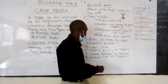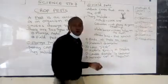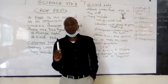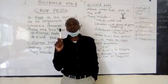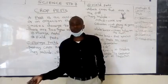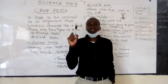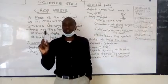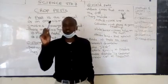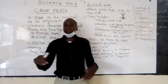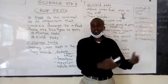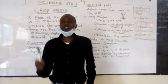Number two, low yields. When pests attack some parts of a plant, such as leaves, they interfere with the process of photosynthesis. And when the process of photosynthesis is interfered with, some pests also attack flowers, some also attack fruits, therefore reducing the quality of harvest.